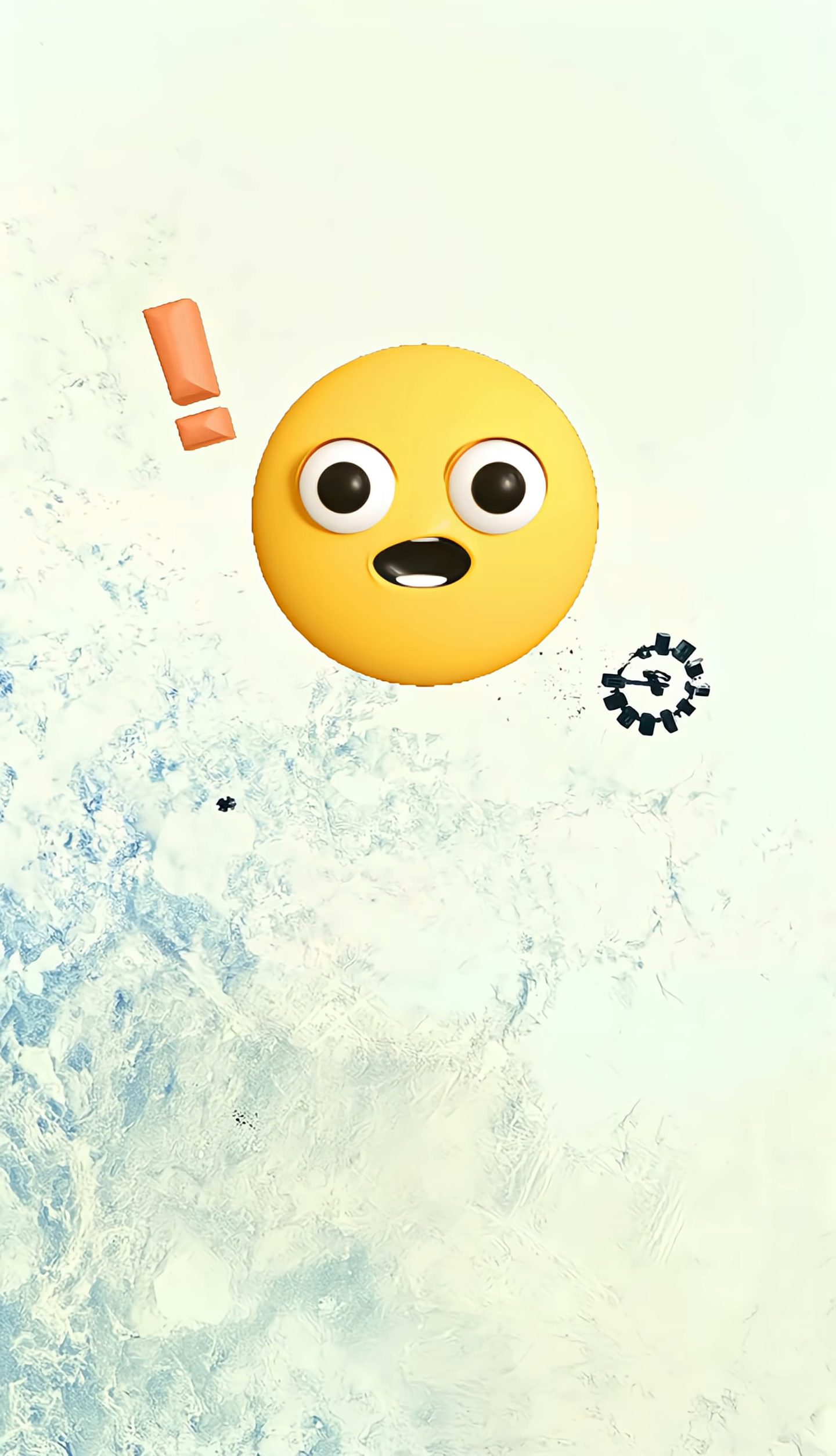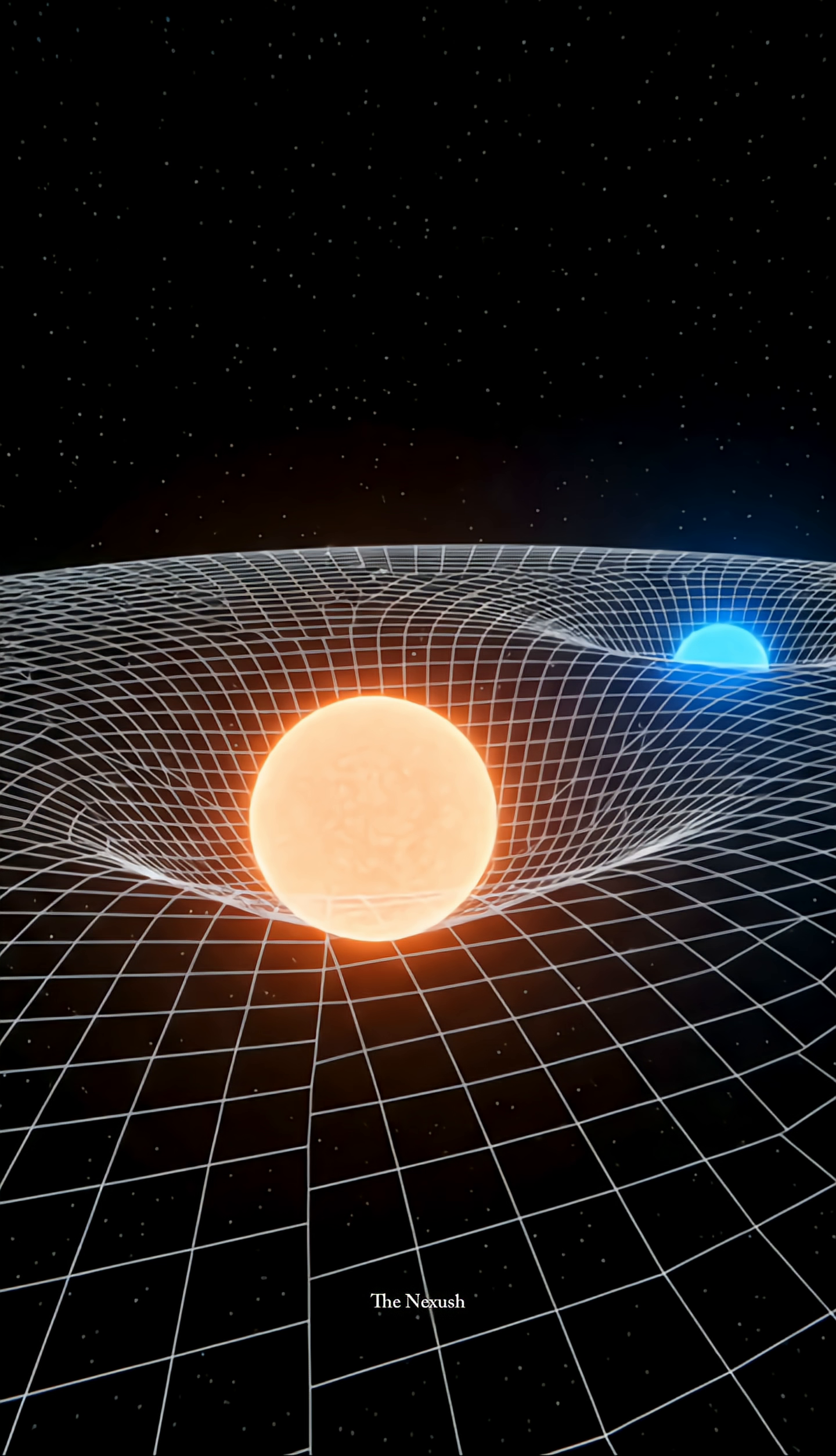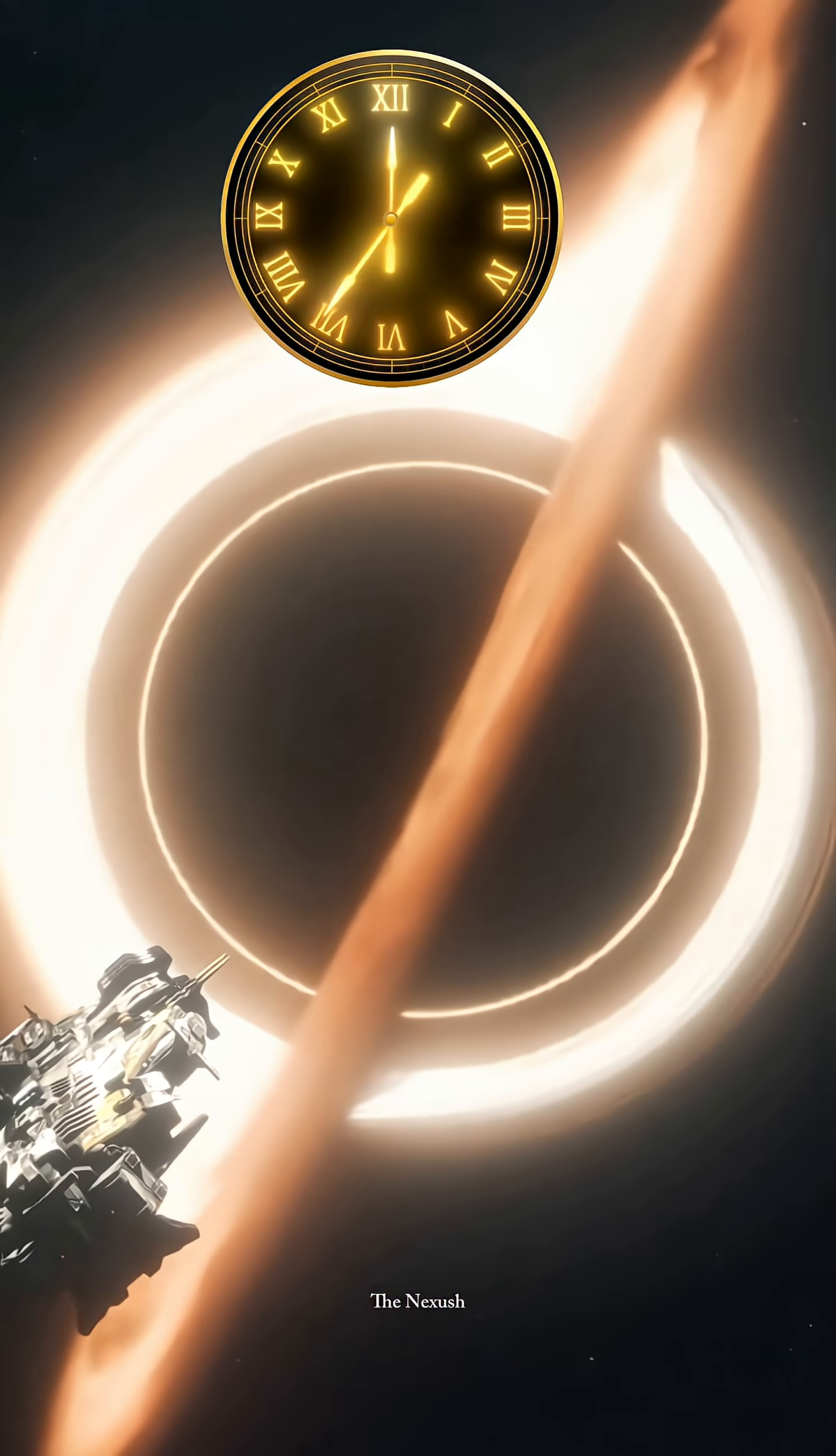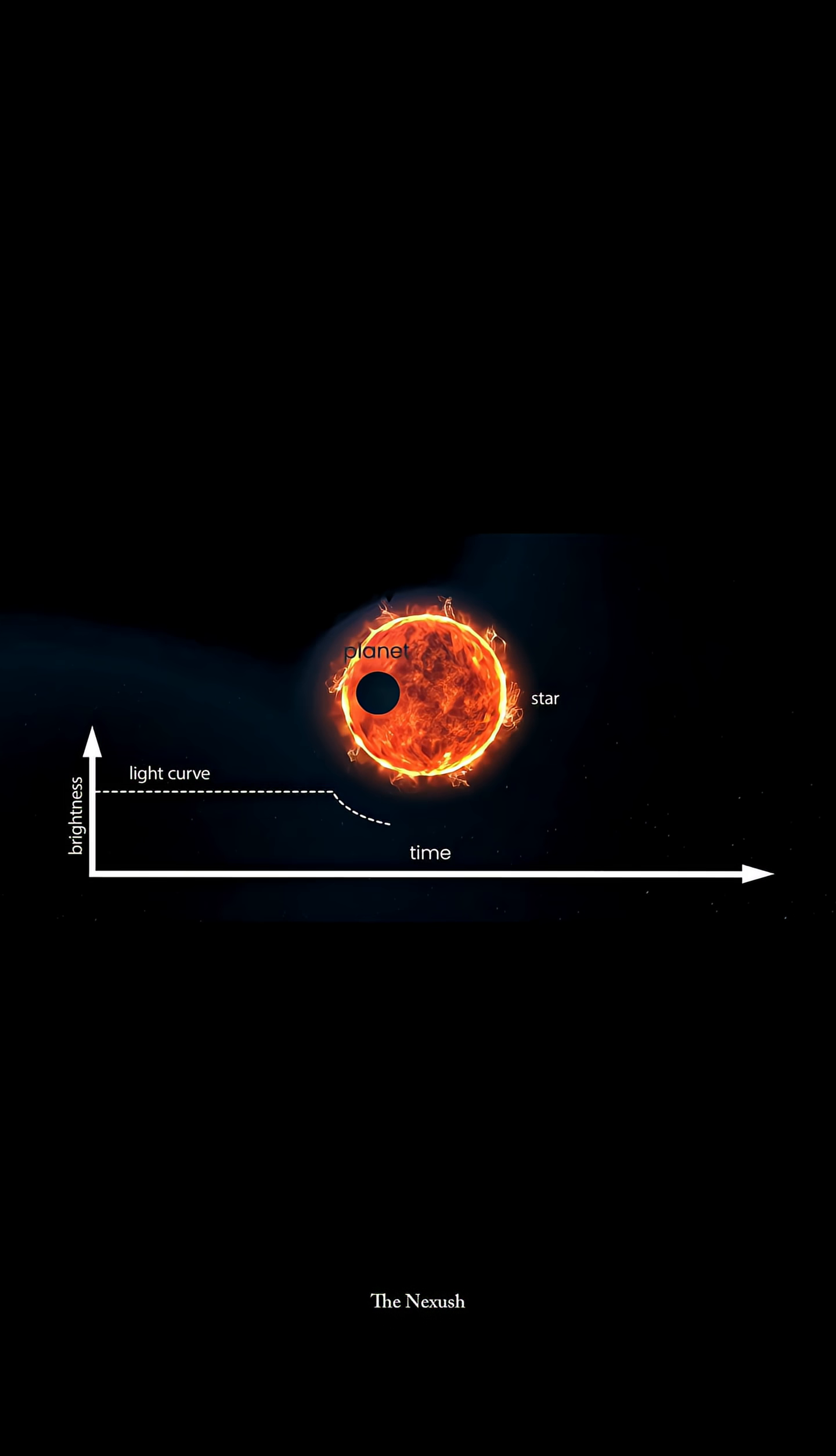But the question is, why does time move so slowly on this planet compared to Earth? As Einstein explained, in regions of space where there are extremely massive objects, such as black holes, time slows down significantly in their presence.